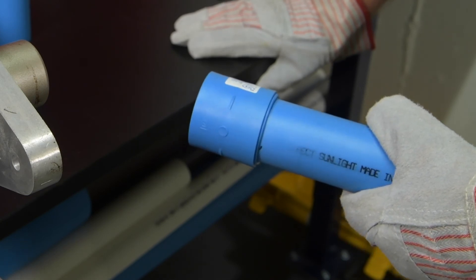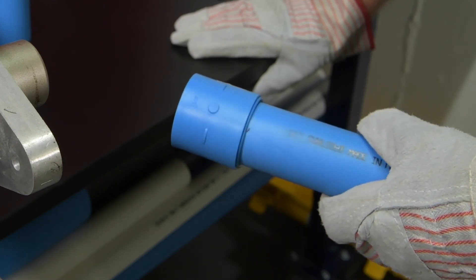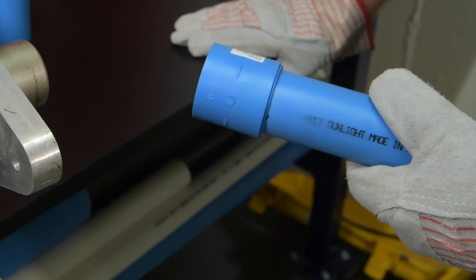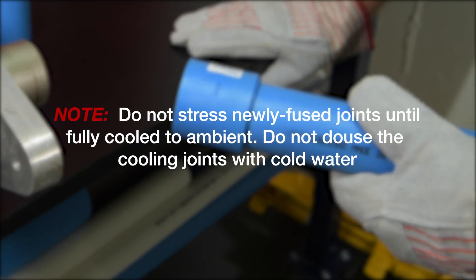The melted surfaces will begin to fuse within 5 to 7 seconds of being removed from the tool. Any attempts to straighten or otherwise alter the joint after this time will break the weld, resulting in a leak. Do not stress newly fused joints until fully cooled to ambient. Do not douse the cooling joints with cold water.